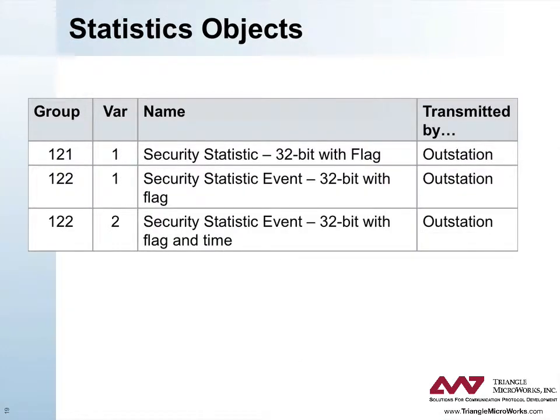This slide shows the statistics objects. These objects are contained in groups 121, for static values, and group 122, for events, and are sent by the outstation.